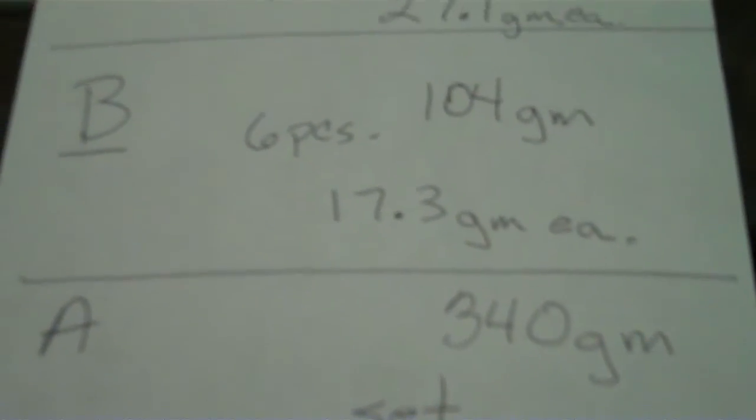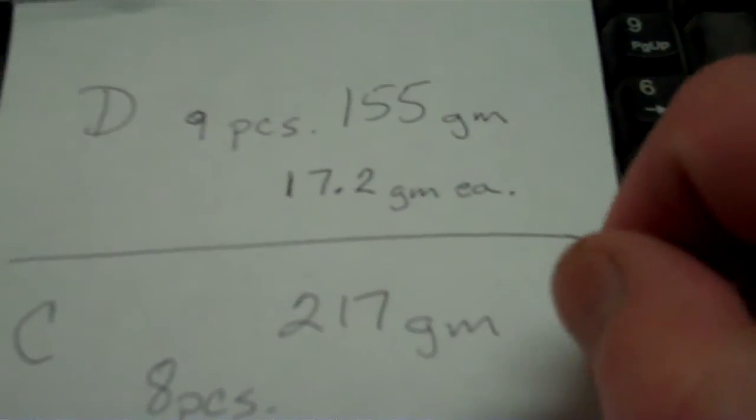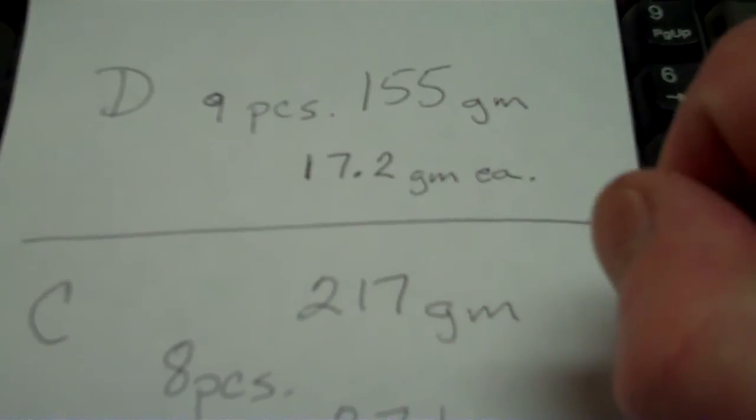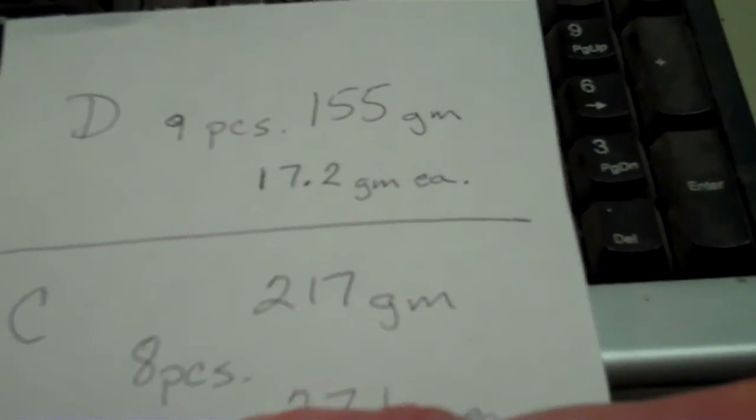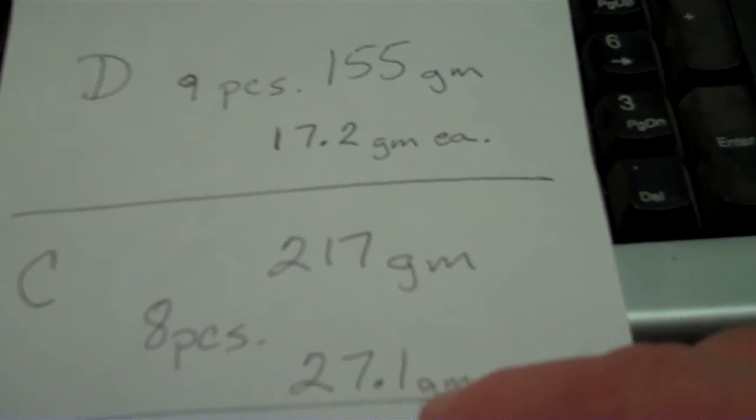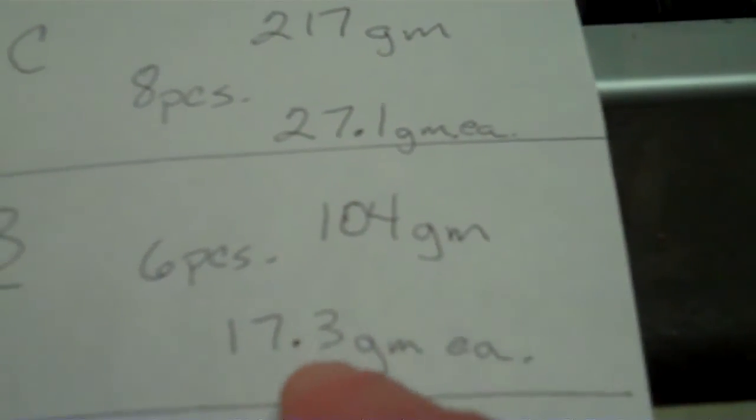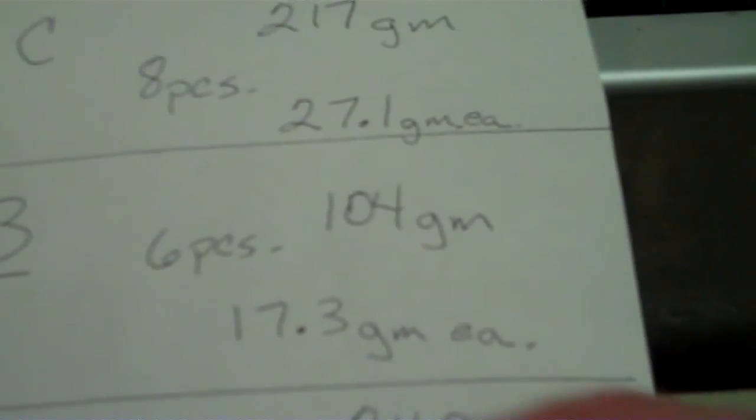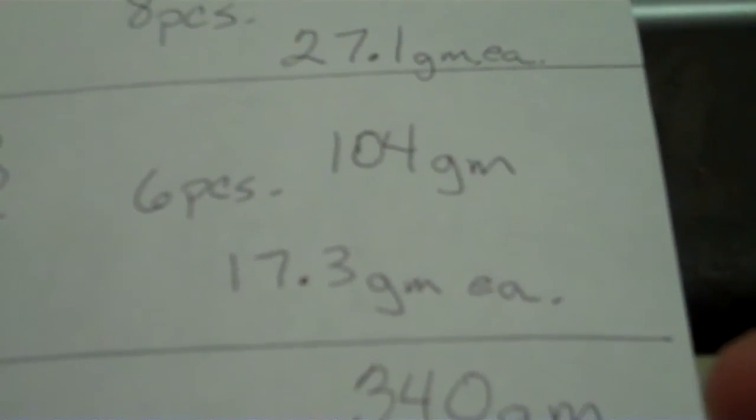So there you have it. I hope that's helpful for pickers out there wondering what an average set of salt and peppers weigh. They weigh 17.2 times 2. The larger candle holders, your average candle holders, at 27.1 times 2 would be what a pair of those would weigh. And your smaller weighted candlesticks, 17.3 each, so whatever that is, times 2, roughly an ounce for a pair.